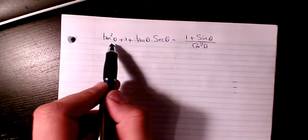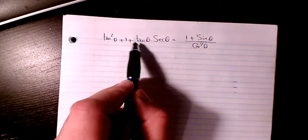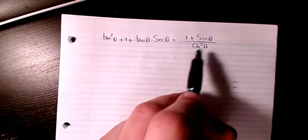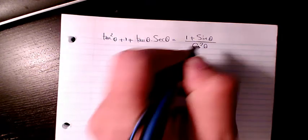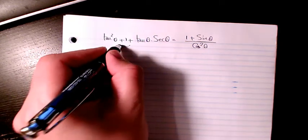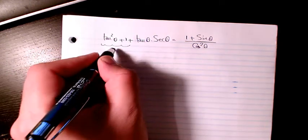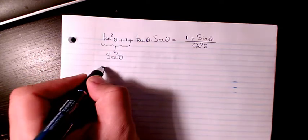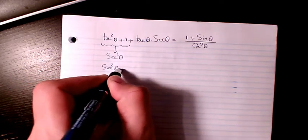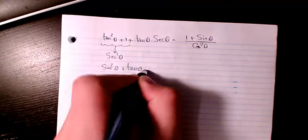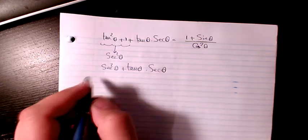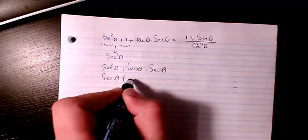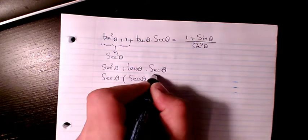In this example, I have tan squared theta plus 1 plus tan theta times secant theta equals 1 plus sine theta divided by cosine squared theta. We know tan squared theta plus 1 is the same as secant squared theta. So I have secant squared theta plus tan theta times secant theta, then I can factor out secant theta to get secant theta times the quantity secant theta plus tan theta.